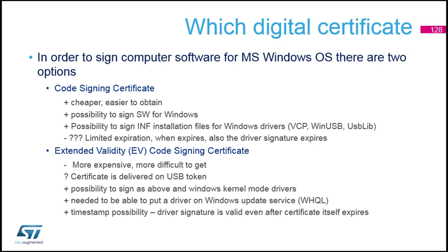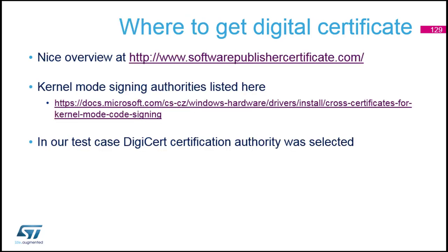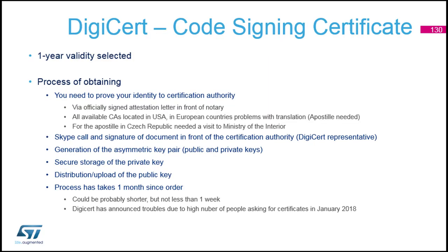With extended validity you can also sign more things, but we don't need it. So we tried and succeeded to get the code signing certificate. There are some links to the list of signature authorities — companies that can help you and provide the signature. At the end we chose DigiCert, mainly because it was the cheapest. With DigiCert we got the signature for one year.